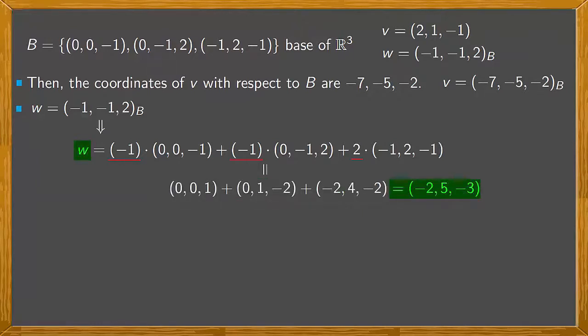So, we have that W is (-2,5,-3). And we say this is the representation of W as a vector in R³.